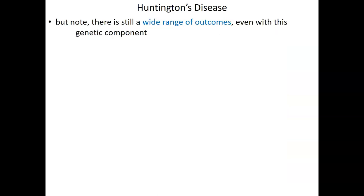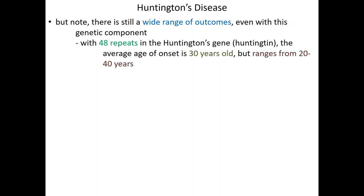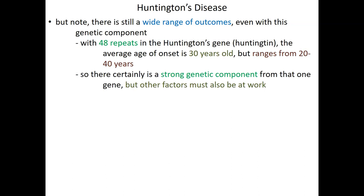Physicians and genetic counselors can give patients a fairly reliable estimation of when symptoms will emerge simply based on the number of CAG repeats. On a graph, individuals with 50 repeats will probably show initial symptoms in their 30s, whereas people with 40 repeats will likely live until around 60 before experiencing symptoms. However, individuals with the same exact number of repeats can develop symptoms at very different times, because other factors — other genes, environmental factors — are also clearly at work.